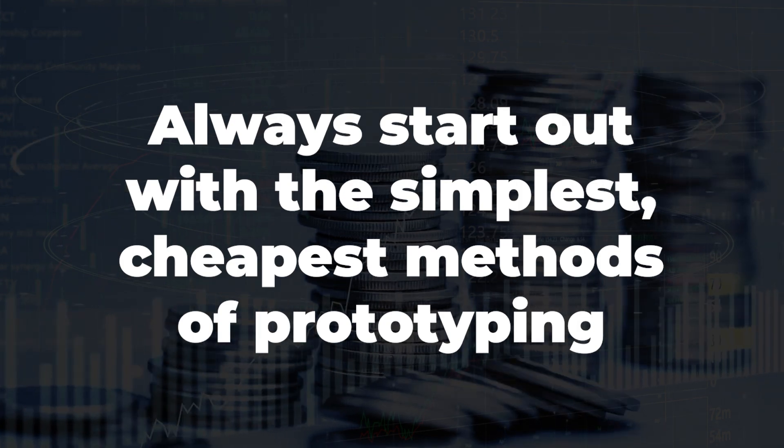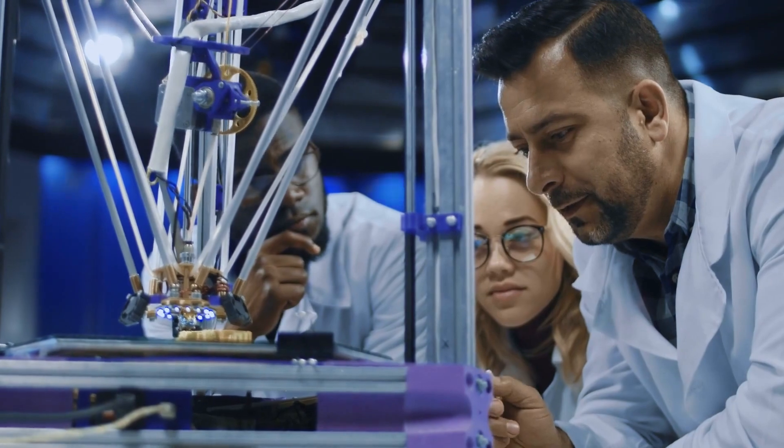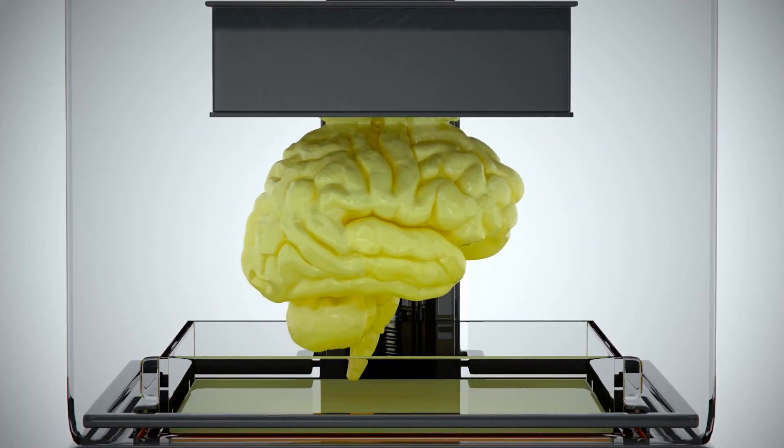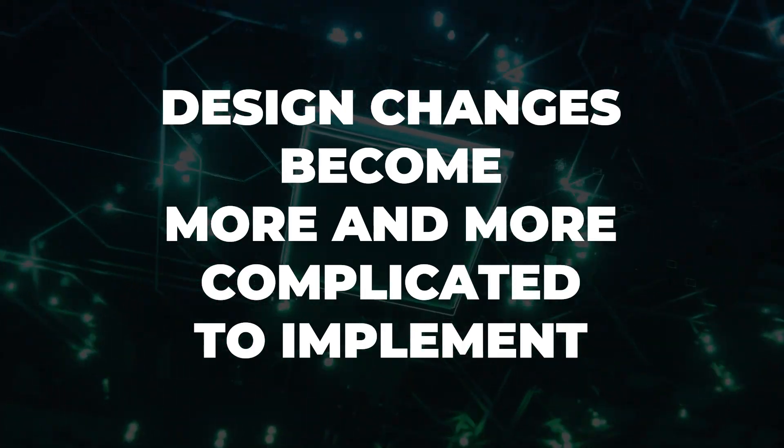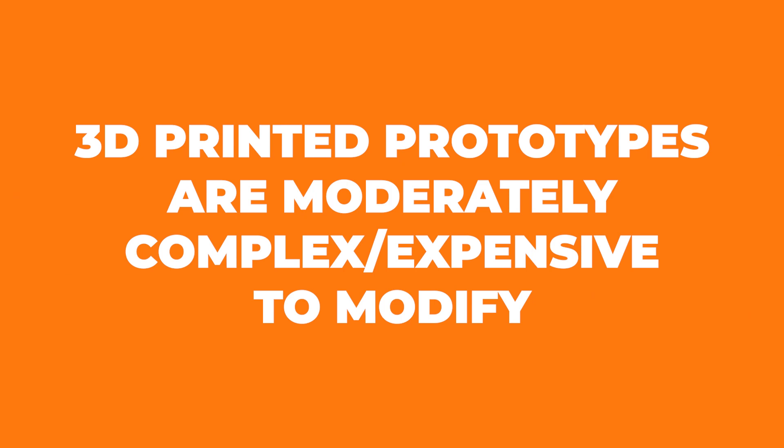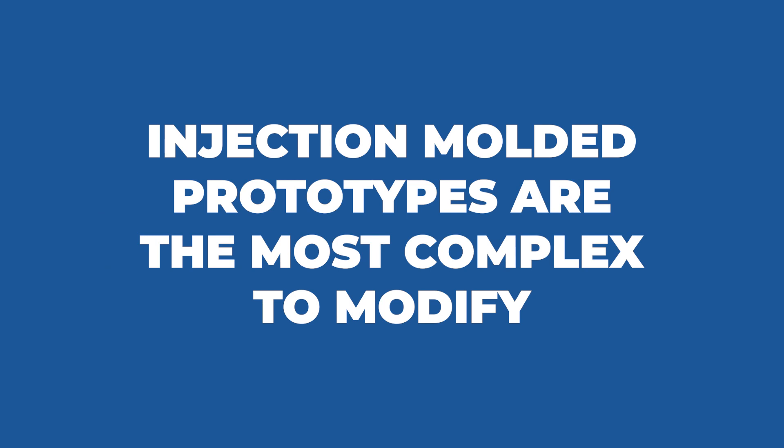With my own product, my earliest prototypes were made of clay. These clay models gave me critical feedback about how the product actually feels in the user's hands. Starting with clay prototypes may also reduce the number of prototype iterations you will need when you eventually upgrade to 3D printing. Always start out with the simplest, cheapest methods of prototyping and learn as much as you can from low-cost prototypes before migrating to more advanced technologies. As you work your way up the prototyping technology hierarchy, design changes become more and more complicated to implement — clay prototypes are trivial to change, 3D printed prototypes are moderately complex and expensive to modify, and injection molding prototypes are the most complex and expensive to modify.